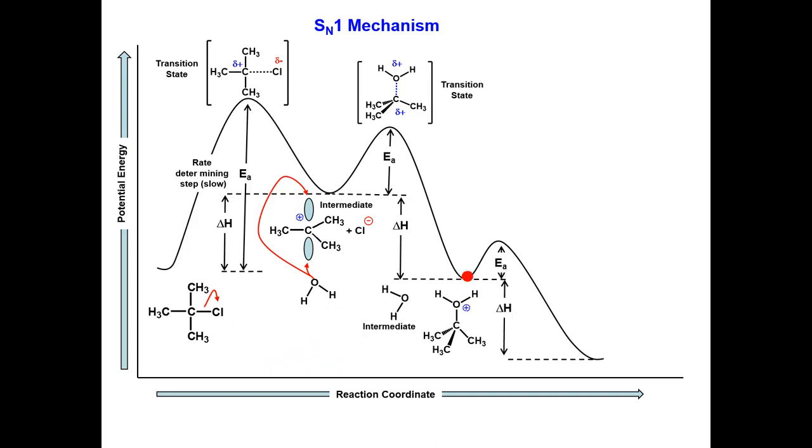In the last step, a rapid acid-base reaction occurs. The protonated alcohol is an acid, and water is the base. A rapid transfer of the proton from the alkoxonium ion to water occurs to form an alcohol and a hydronium ion.